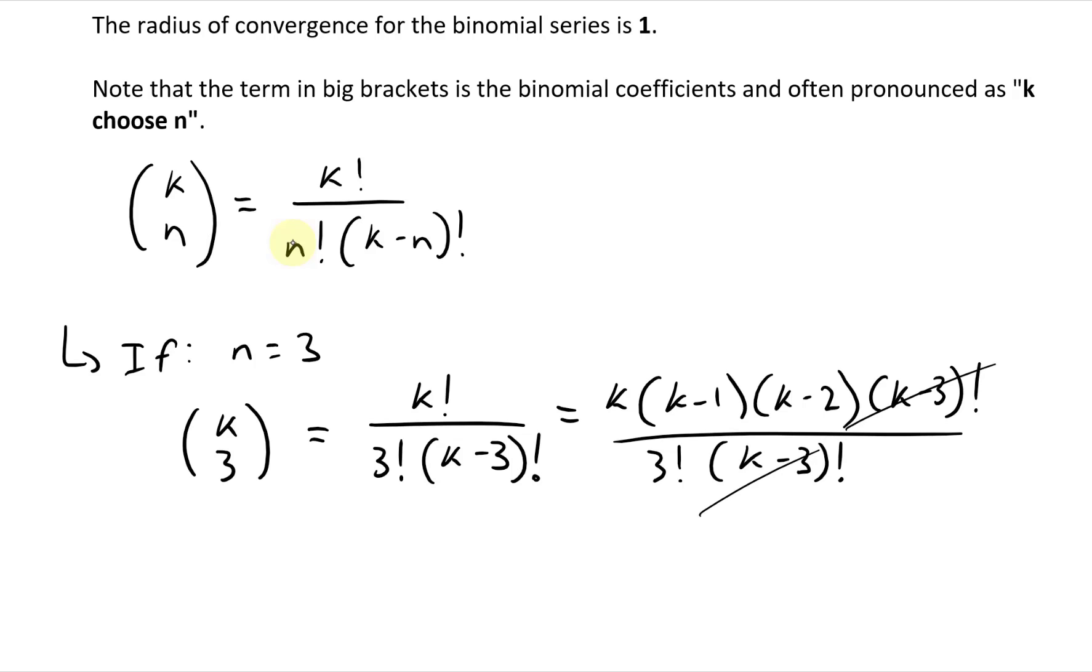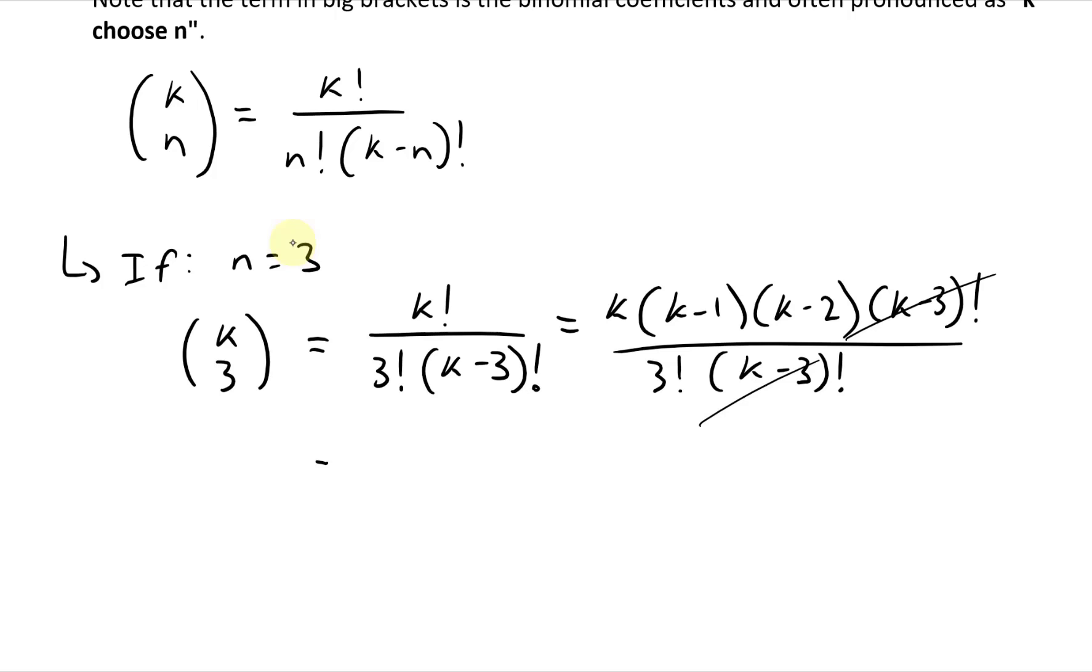So in other words, this and this cancel out. All you're left with is k times k minus 1 times k minus 2, divided by 3 factorial.